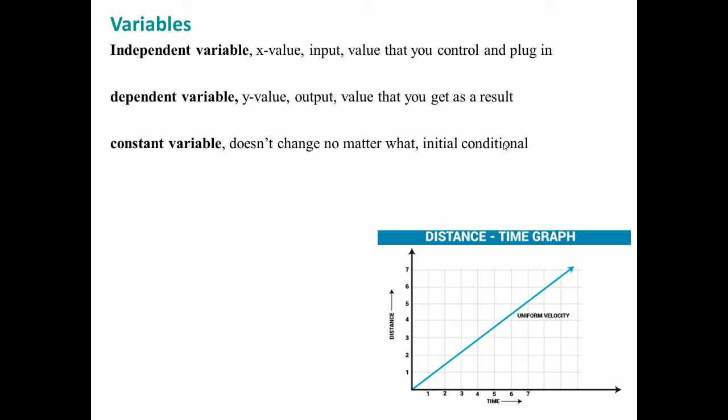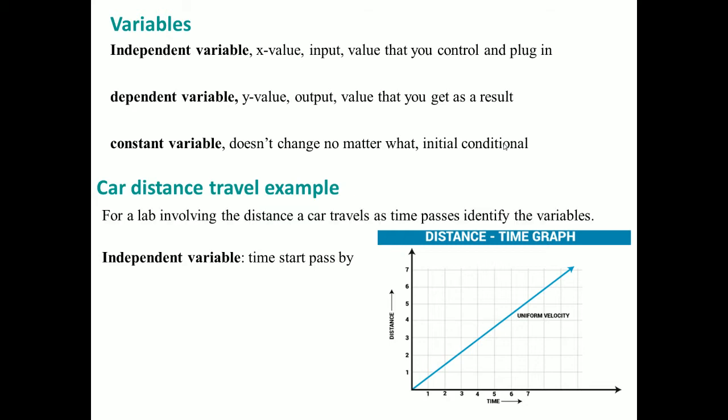In this graph that I give, which is the distance and time graph, you should see the independent variable as time because it is on the x-axis. It is something that you control, what you plug in. The result that we get is the distance traveled by the object. The constant variable here is your starting distance of the car because where the car starts is the initial condition. Sometimes you see that as the y-intercept.